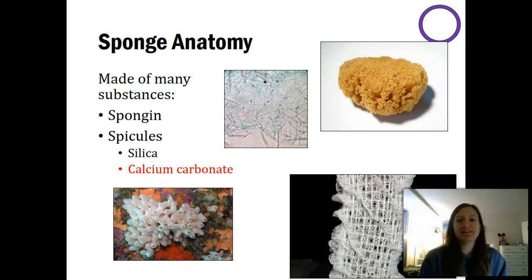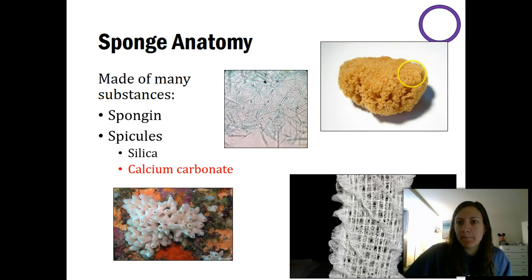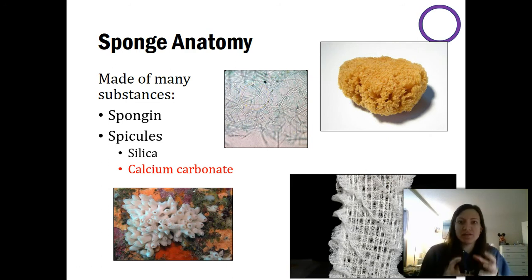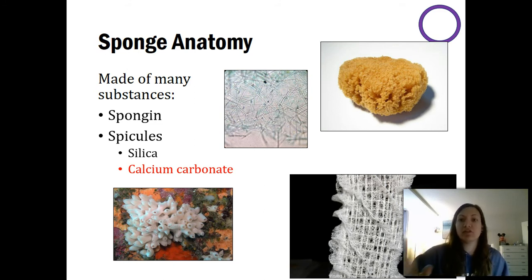Spicules have a couple of different functions. When you're looking at a sponge, you don't really see the spicules — they're microscopic. One function is defense: if a fish bites the sponge and encounters what is essentially glass inside it, it's not going to want to eat it anymore. Also, while spongin is a very soft material, spicules — whether silica or calcium carbonate — are very hard and sturdy and help give structure to the sponge body.